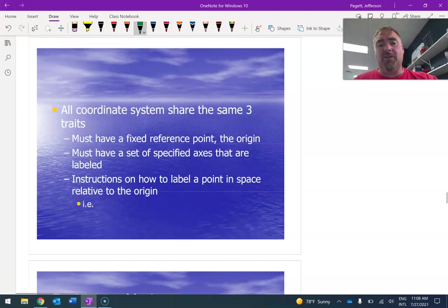They have to have a fixed reference point, a.k.a. the origin. That's number one, because that way we need to know, that allows us to see where we're measuring from. If I just tell you to measure your distance, how far you went, everybody's going to get different answers if we're measuring from different spots. They have to have a set of specific axes that are labeled. So you need to know, if I'm going along the x-axis, every tick mark is one centimeter, or a meter, or kilometer, or whatever. And then they have to have instructions on how to label a point in space relative to the origin.